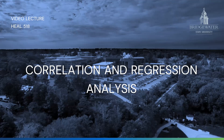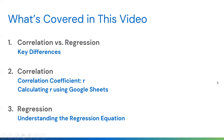Welcome to this video lecture for HEEL 518 on correlation and regression analysis. This is only going to be a toe in the water of this topic, covering just the basics. We'll begin by looking at the differences between correlation and regression, then dig deeper into the correlation coefficient r, how to calculate it in Google Sheets, and finally cover simple linear regression and how to understand the regression equation.